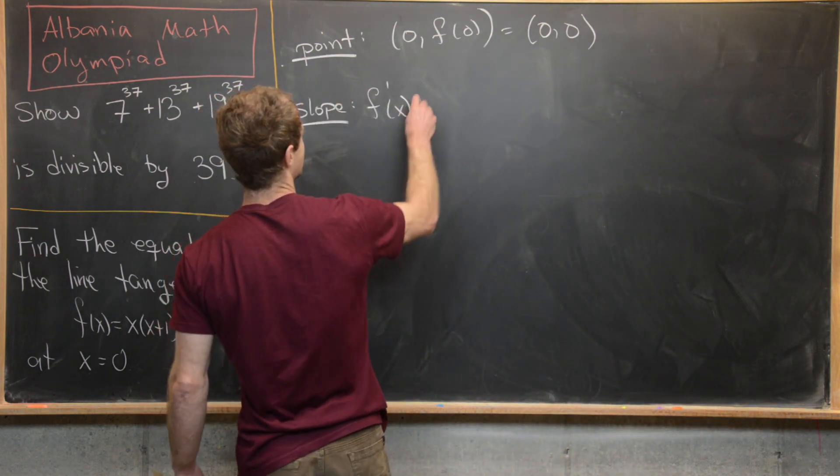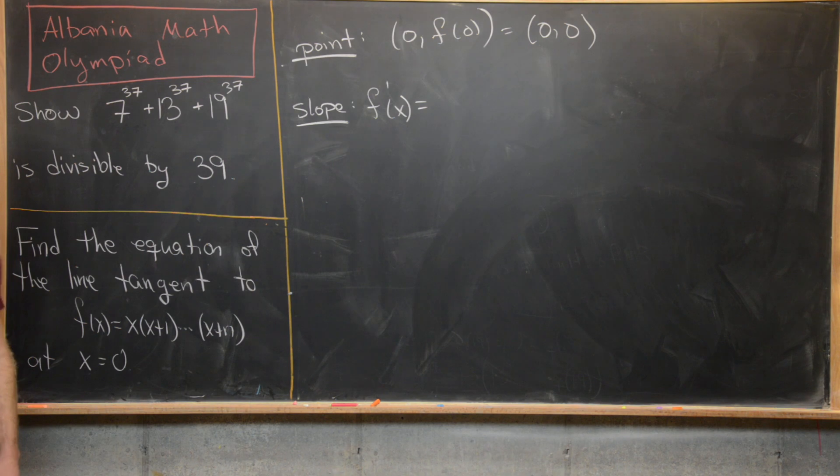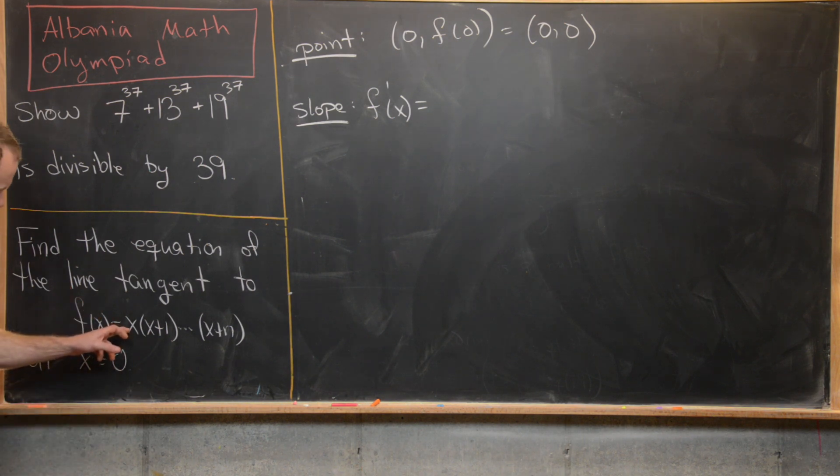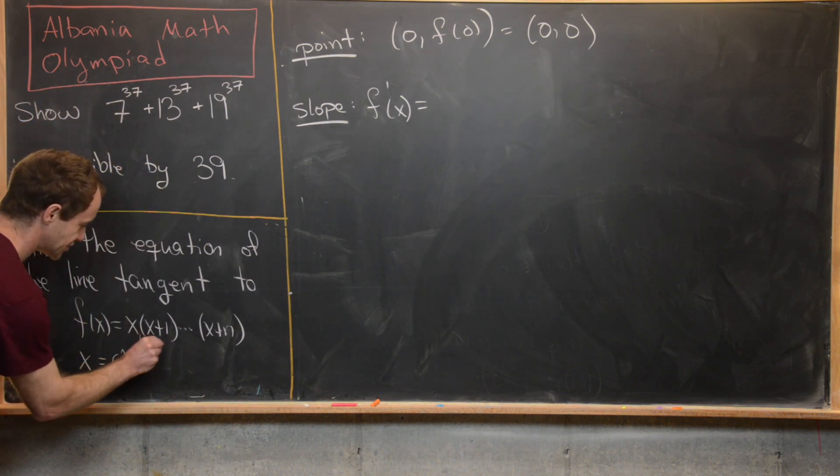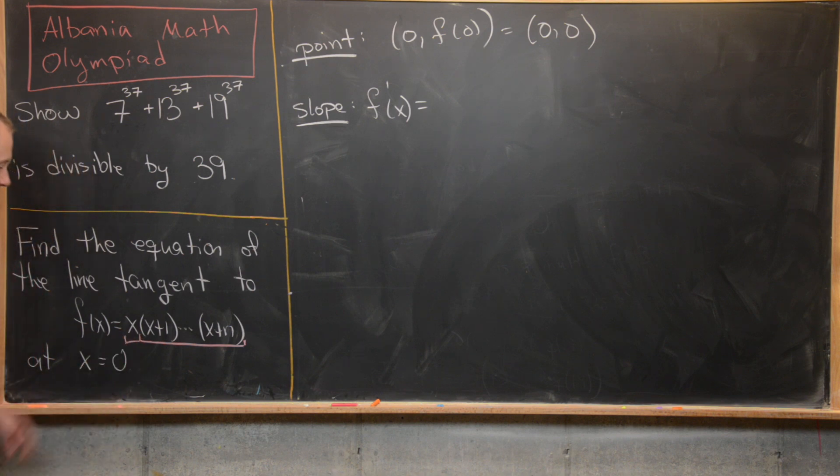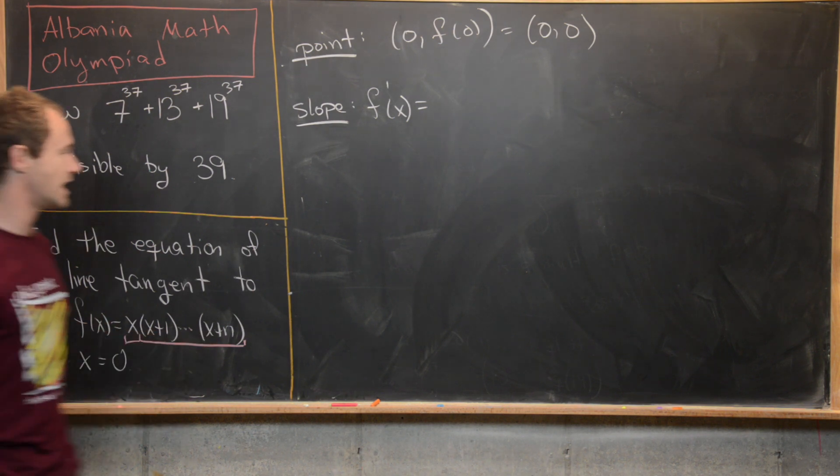We want to take the derivative of this function f. Now there are a bunch of different ways to take this derivative. You could use some sort of very general version of the product rule because we're taking the product of n+1 functions here. But I think that's a bit overpowered. The way I want to think of it is splitting this thing up into two functions. So we'll split it up into x times the rest of this product. So we've got x times (x+1) all the way up to (x+n).